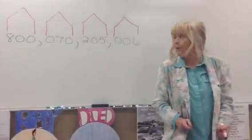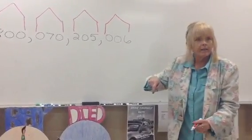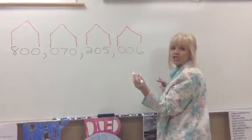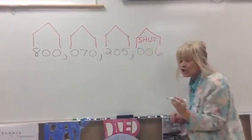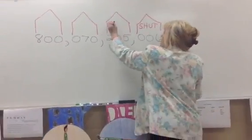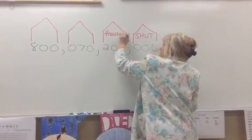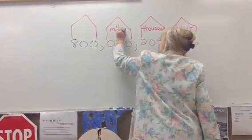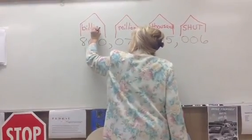How many people are in each house? Three. So the name of this house is the shed house. You don't say its name. This is the thou house — thousands. This is the mill house — millions. And this is the bill house, or billions.